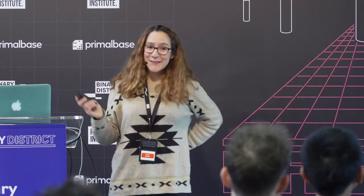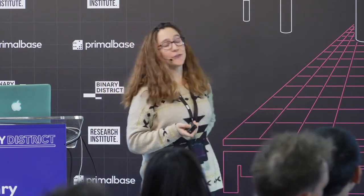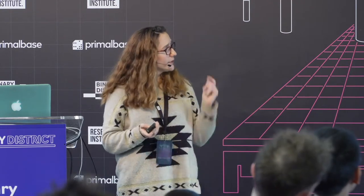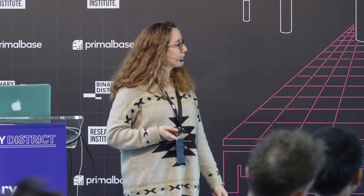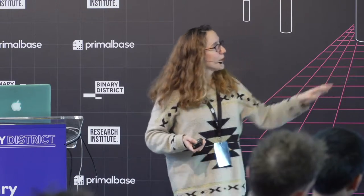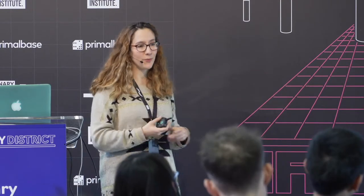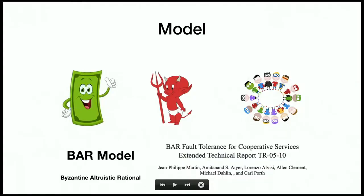Fortunately there is some research done in this area. What we're going to use is called the BAR model, presented by Jean-Philippe Martin and co-authors. BAR stands for Byzantine, Altruistic, and Rational. So we consider three types of players: Byzantine, Altruistic — honest players who just follow the protocol — and Rational, who want to maximize their profits.